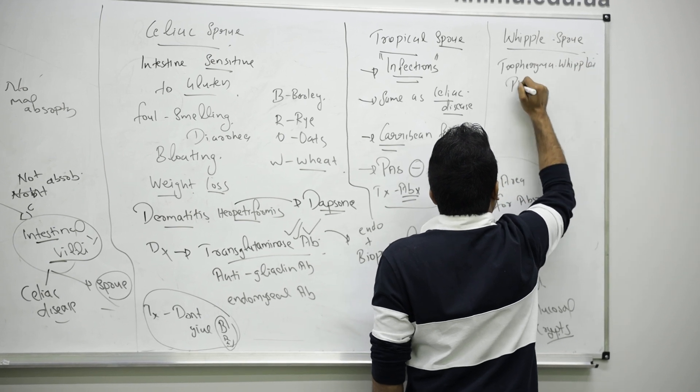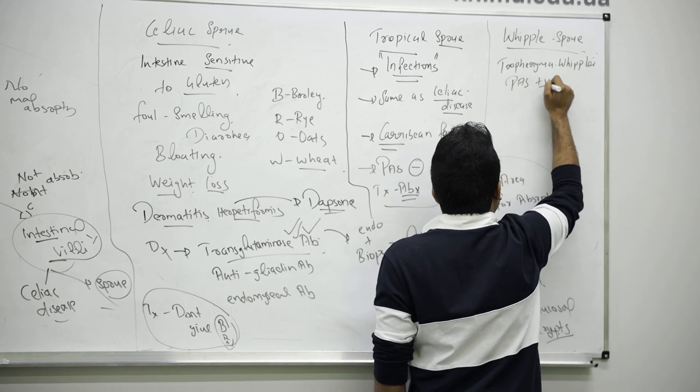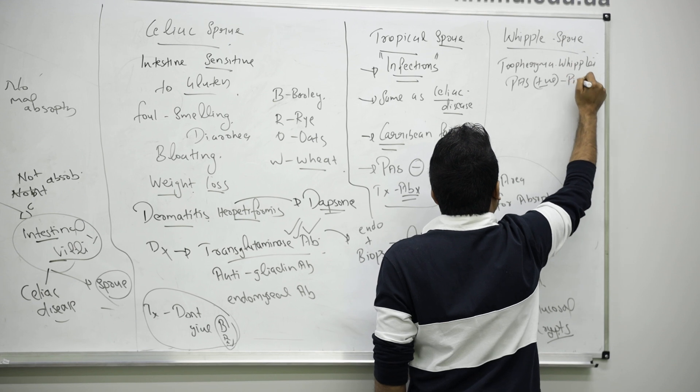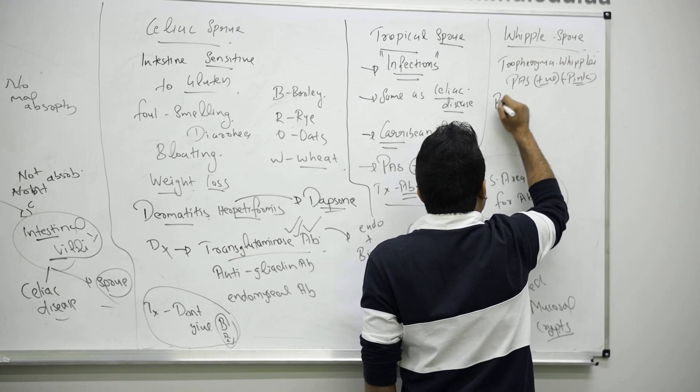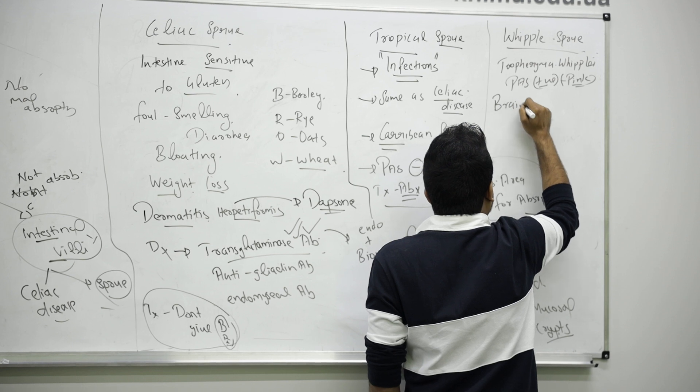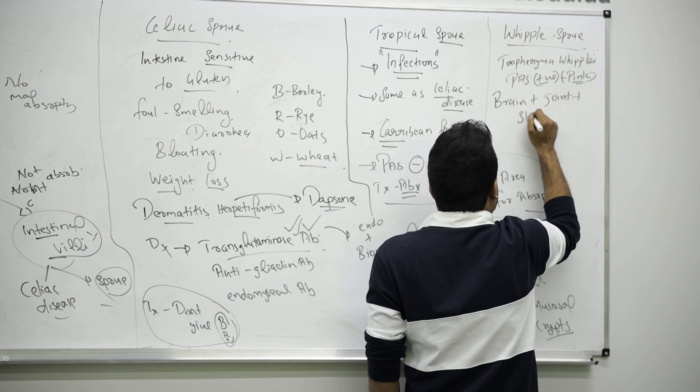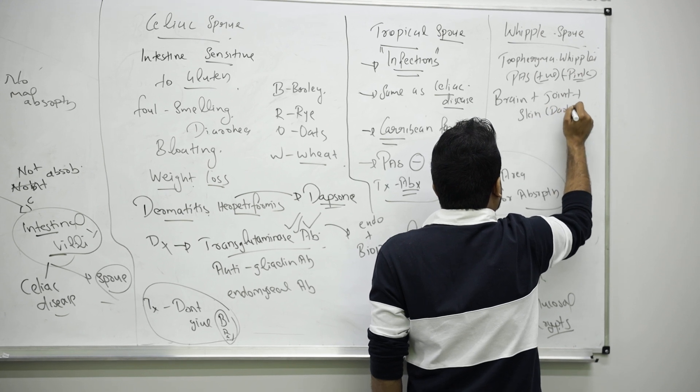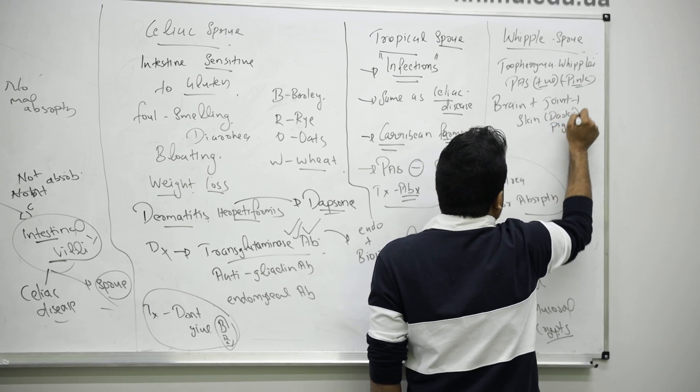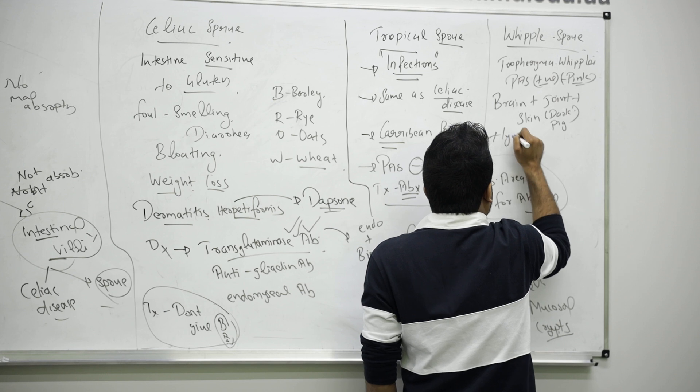They are PAS positive. You will see a pink colored organism. It will affect not only the GIT, but brain, joints, skin with dark pigments, and lymph nodes.